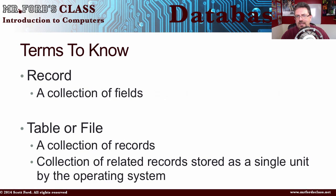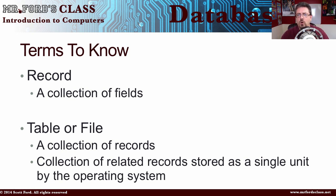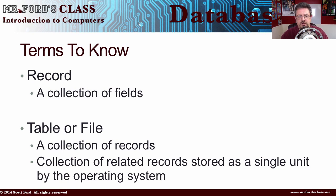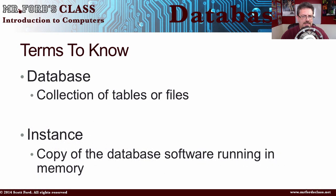A record is a collection of fields. So a field might be a birthday, a street address, or a name — and a record is those things put together. If I put a name with a birth date and a street address, I have contact information: I have a record. A table or file is a collection of those records. For example, a contact database isn't just one person but a whole bunch of people in your contact information — it's a collection of related records stored as a single unit by the operating system. And a database is a collection of tables or files.